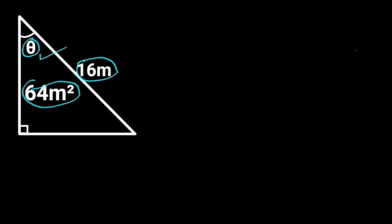To solve this problem, first let the height and base of the triangle be x and y. Since the area of a triangle is 1/2 times base times height, it follows that 1/2 times x times y is equal to 64.